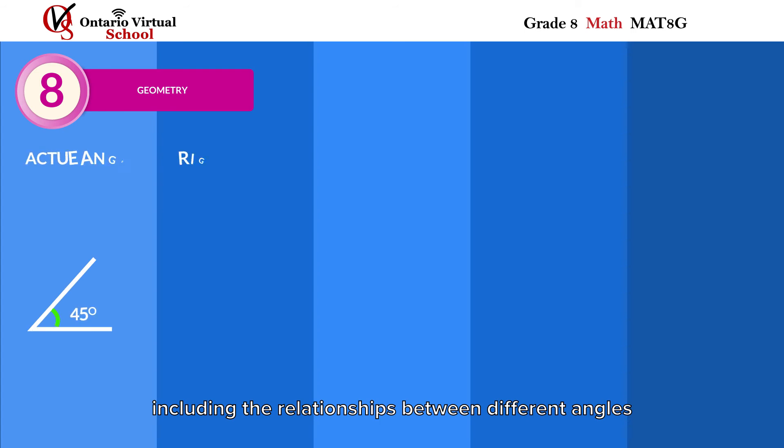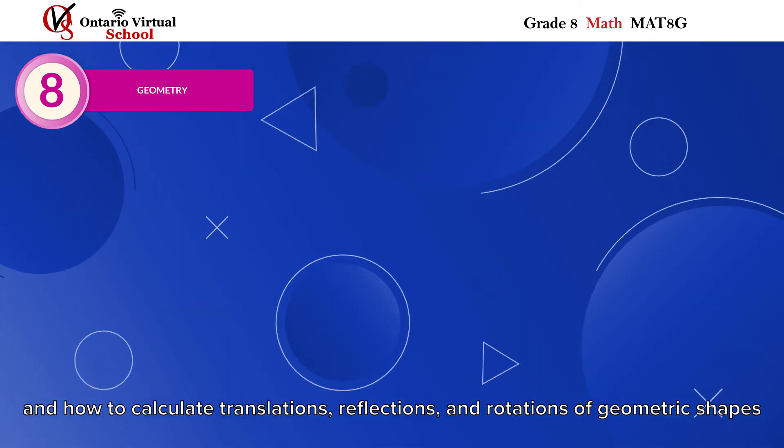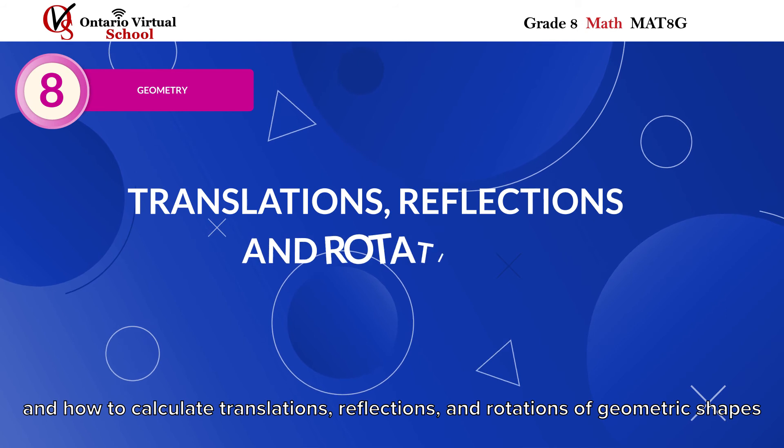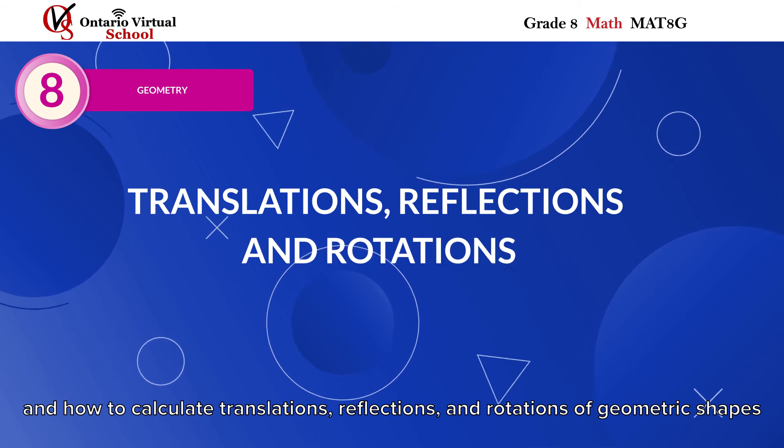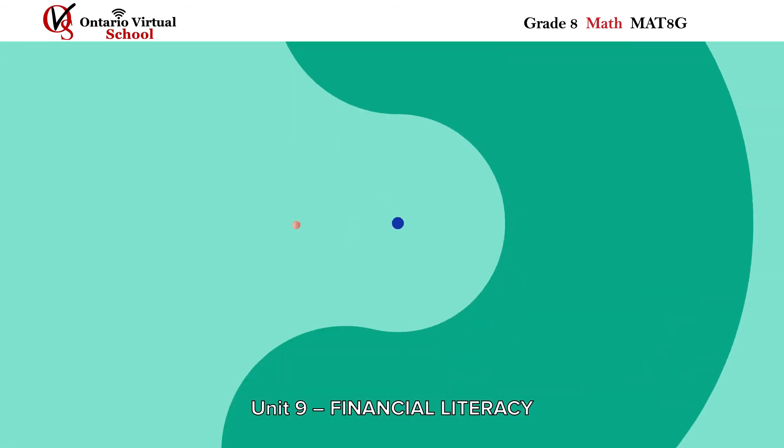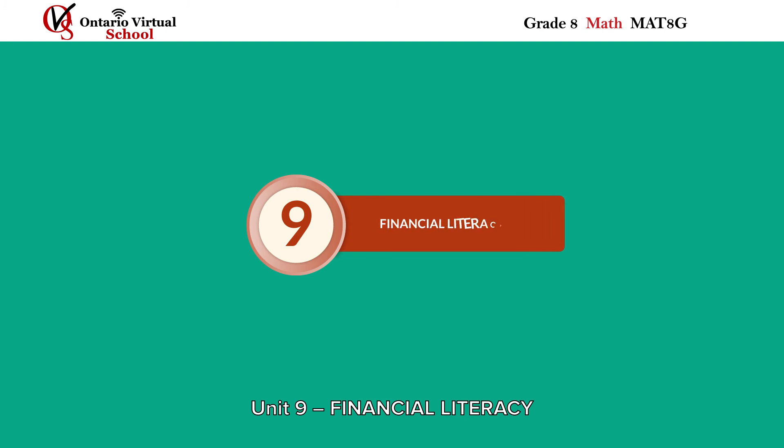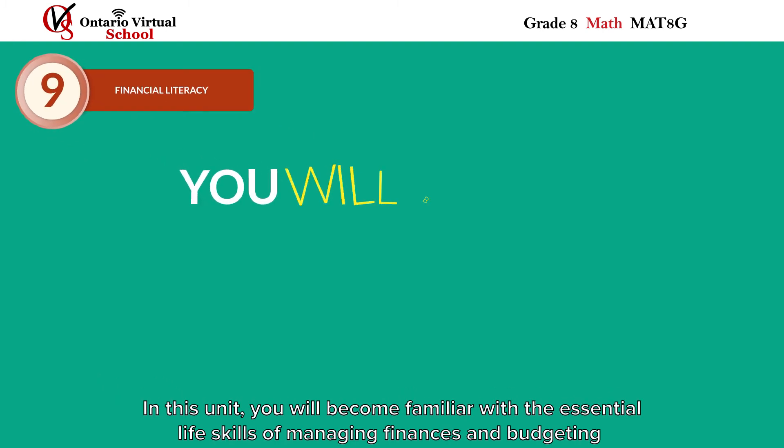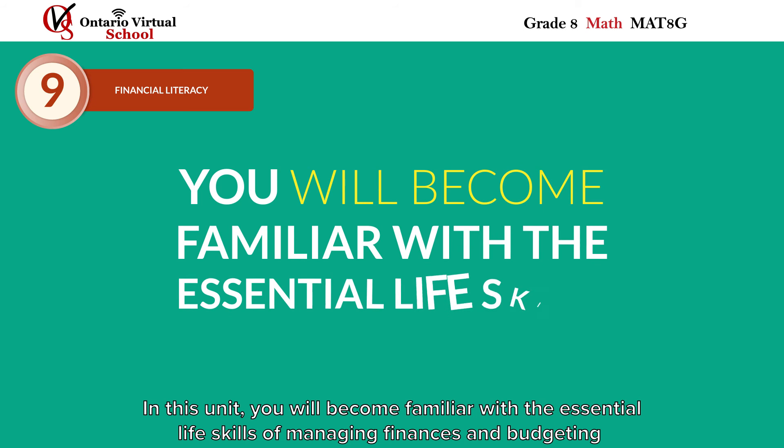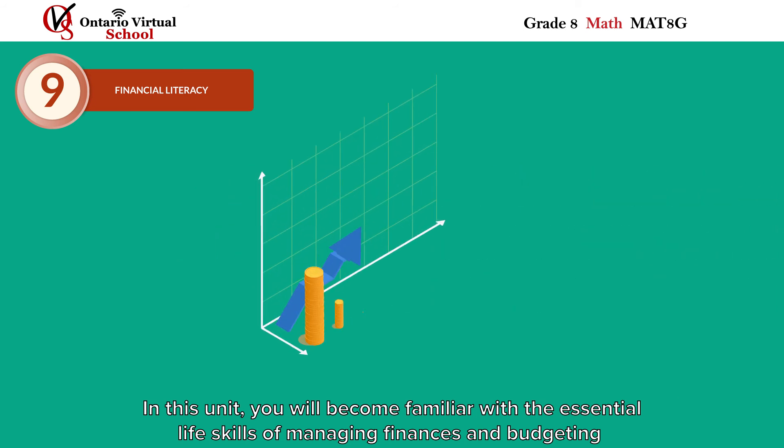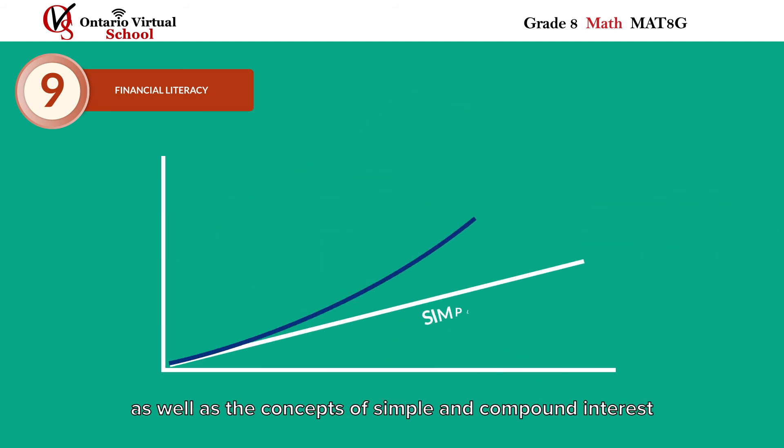including the relationships between different angles and how to calculate translations, reflections, and rotations of geometric shapes. Unit Nine, Financial Literacy: In this unit, you will become familiar with the essential life skills of managing finances and budgeting, as well as the concepts of simple and compound interest.